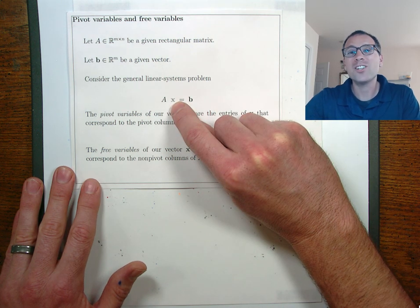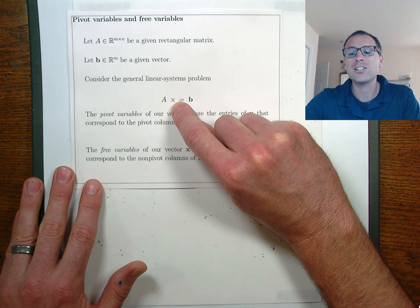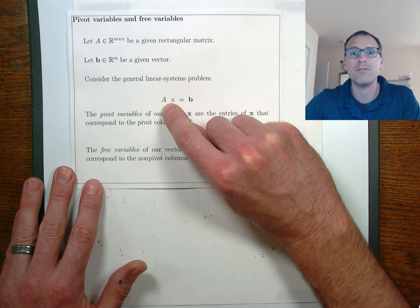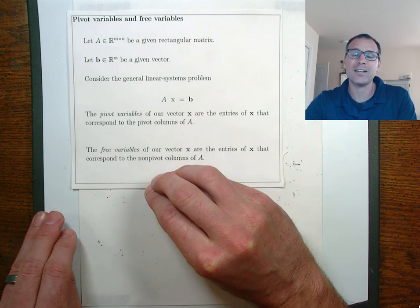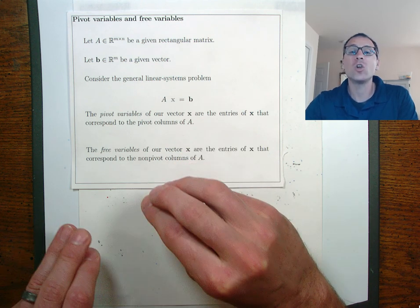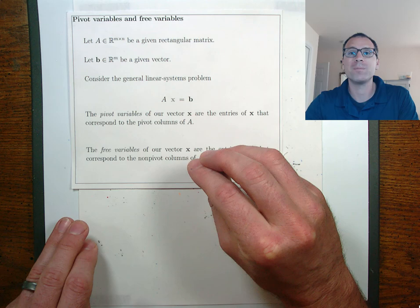Those two technical terms allow us to talk about features in the vector x with respect to the structure of the matrix A. In the next video we'll apply all these new terms and some of the techniques we saw earlier in this lesson to look at an applied linear systems problem. I'll see you there.